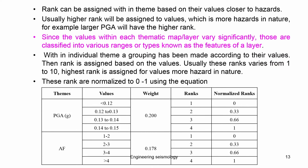Each parameter has subgroup divisions. For example, PGA can be divided into classes depending on the value range in the region — say 4 classifications — and each class is ranked 1 to 4, with the highest rank given to the most hazardous value. Then a normalized rank is estimated using the formula discussed. Similarly, amplification factor can be grouped into 5, 4, 3, or 2 groups depending on the number of hazard classes identified for each earthquake hazard parameter.